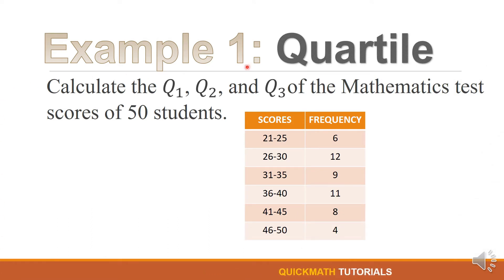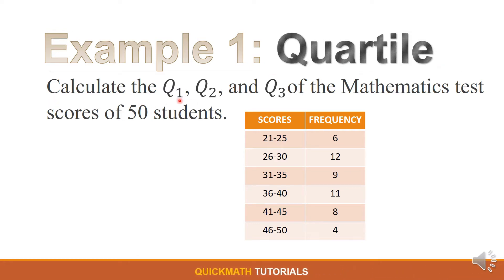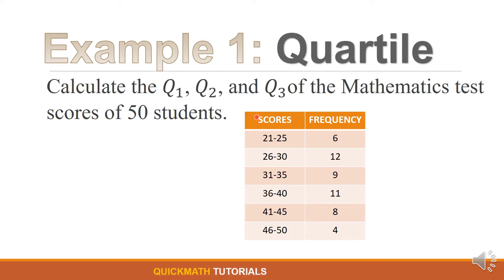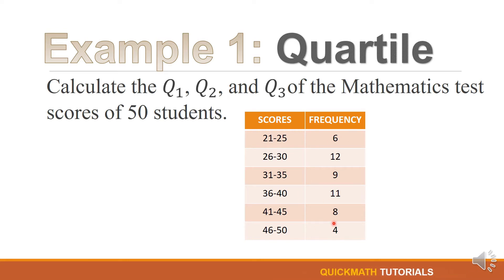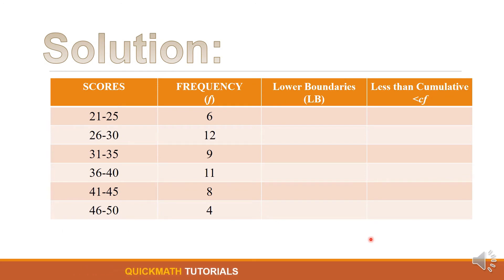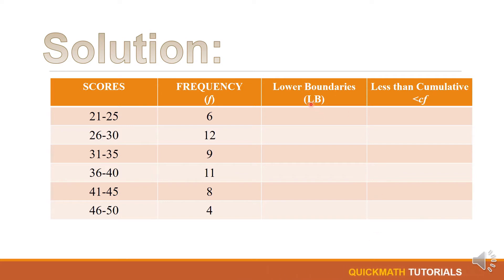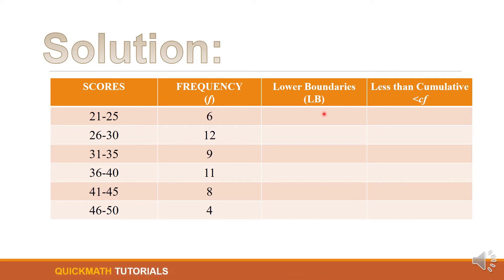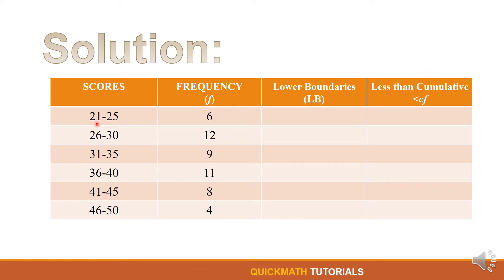Now let's have our first example. We will solve for quartile. Calculate the lower quartile, the median, and the upper quartile of the mathematics test scores of 50 students. We are given the data or the scores and their corresponding frequency. For our solution, we will complete our frequency distribution table by filling in our Lb or lower boundaries. We subtract 0.5 from the left side of our classes: 21 minus 0.5 gives us 20.5.